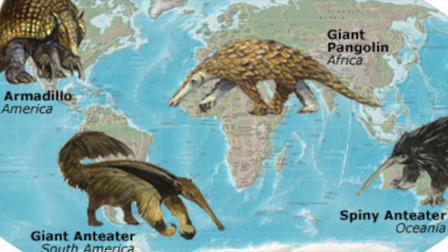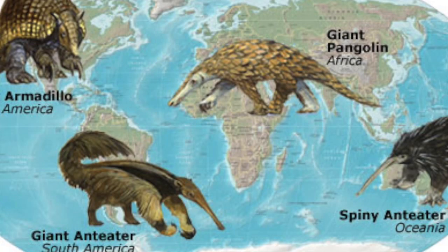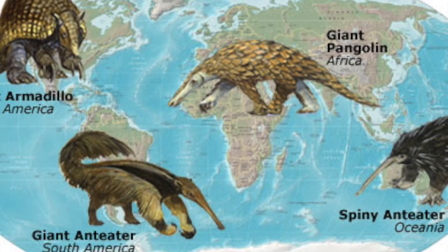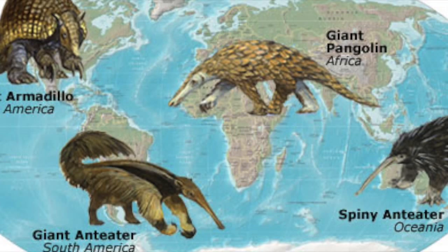In the image above, there are four different species of animals listed. The giant armadillo lives in North America, the giant anteater lives in South America, the giant pangolin lives in Africa, and the spiny anteater lives in Oceania. All these organisms have similar characteristics while not being related. This process, where certain organisms have similar characteristics to another species, is called natural selection.